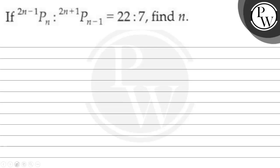So, let us read the question. The question says, if 2n minus 1 P_n is to 2n plus 1 P_{n minus 1} is equal to 22 is to 7, find n.